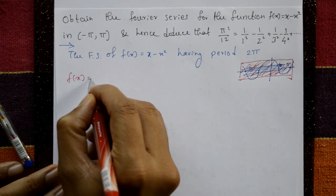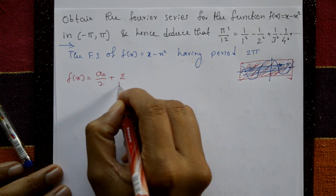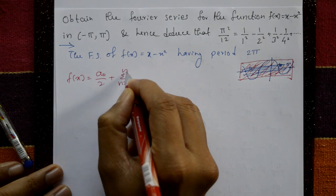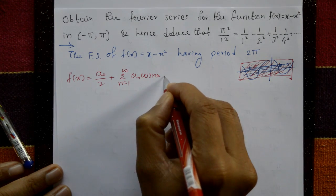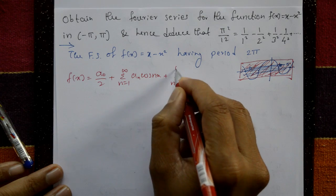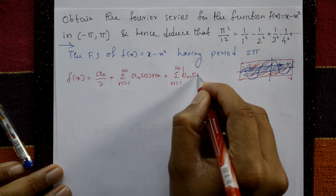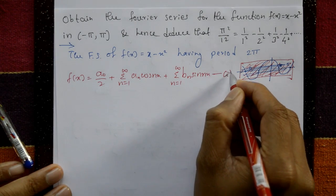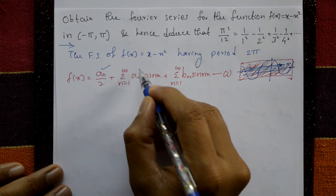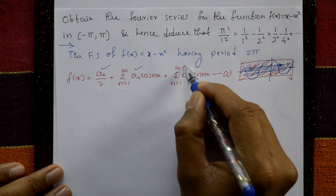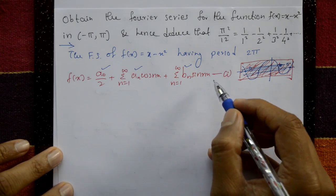f(x) is equal to the series: a₀/2 plus summation from n=1 to infinity of aₙ cos(nx), plus summation from n=1 to infinity of bₙ sin(nx). This is equation number 1. Now find a₀, aₙ, and bₙ, substitute into equation 1, and put a suitable value of x to get the required series.